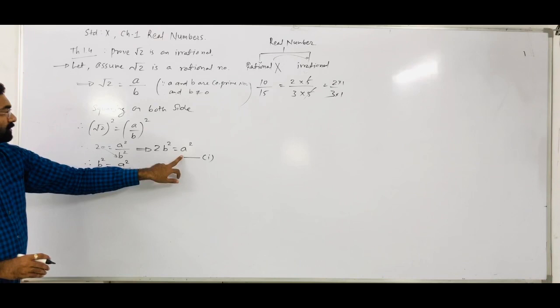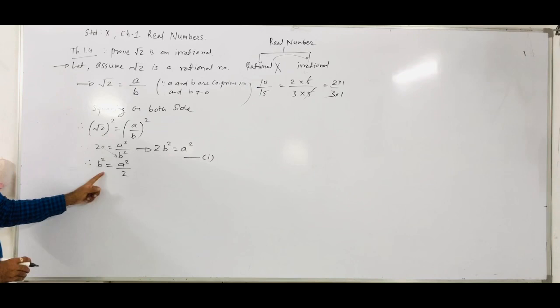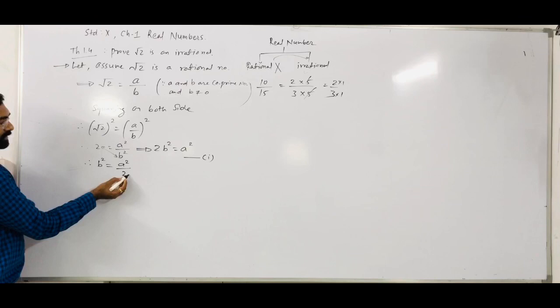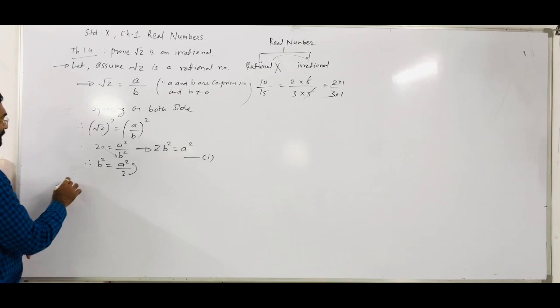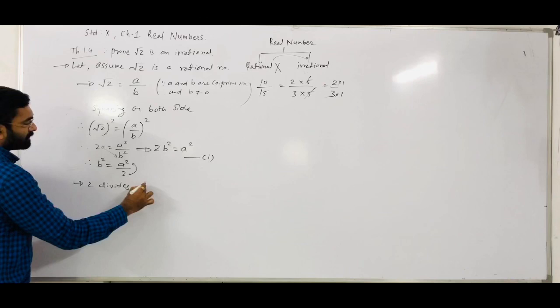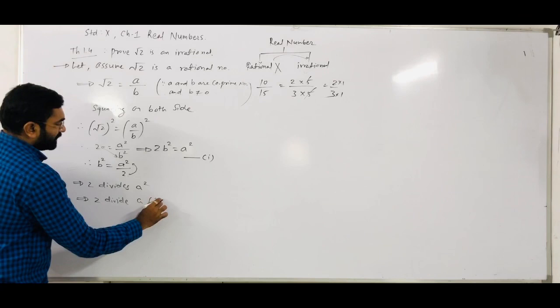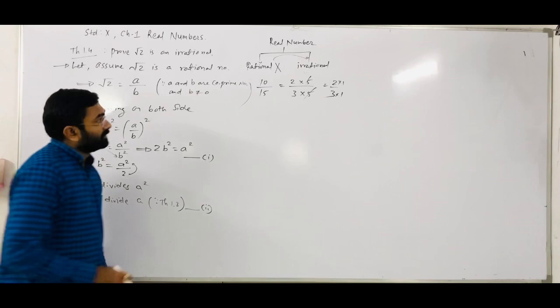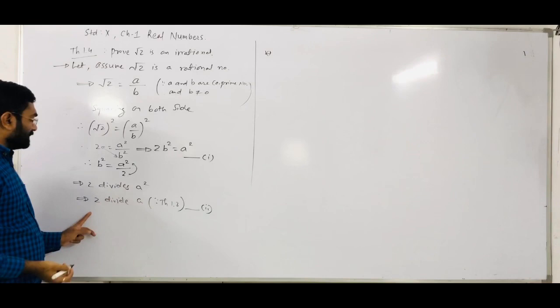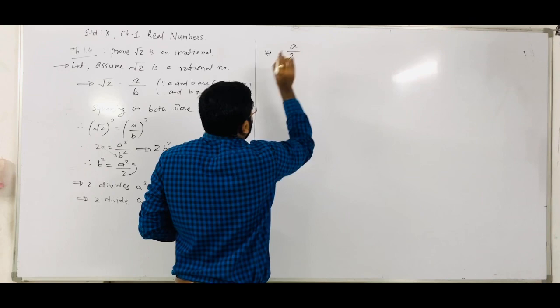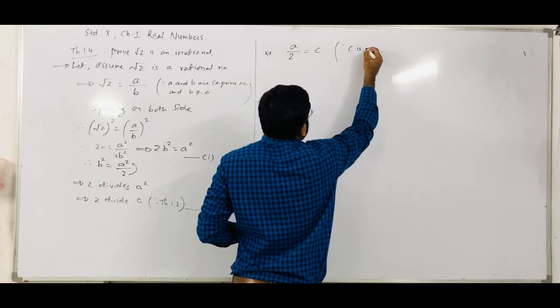Observe — from this we can say 2 divides a squared, and from Theorem 1.3, since 2 is a prime number dividing a squared, we can say 2 also divides a. This is equation number 2. Now, if 2 divides a, then a divided by 2 gives an integer c, where c is any integer. So a equals 2c.